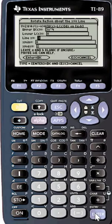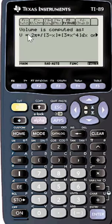The volume is computed using the shell method: 2 pi times the radius times the height. The radius is 3 minus x and the height is 3x to the 4th.